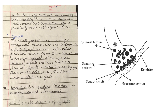The nerve fibers work according to the all-or-none principle, which means that they either respond completely or will not respond at all. The small gap between the axon of a presynaptic neuron and the dendrites of a postsynaptic neuron is referred to as the synapse. Information from one neuron flows to another through the synapse. At the synapse, electrical signals are translated into chemical signals in order to cross the gap, and once on the other side, the signal again becomes electrical.